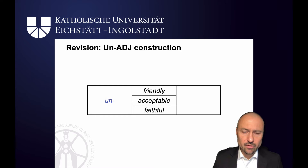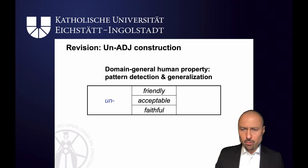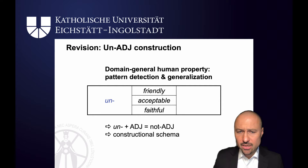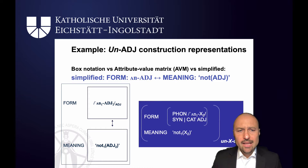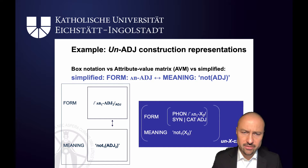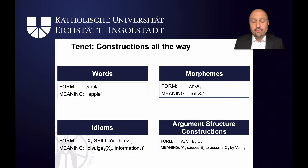Back to our familiar example: unfriendly, unacceptable, and unfaithful, due to domain-general human properties such as pattern detection and generalization, allow us to get to a schema — unadjective, meaning 'not adjective'. In the last video we saw many different ways of representing constructions. Let's stick with a simplified form in light blue: the form is unadjective, the meaning is 'not adjective'. We've also seen that words like apple are constructions, and that morphemes can be seen as constructions.